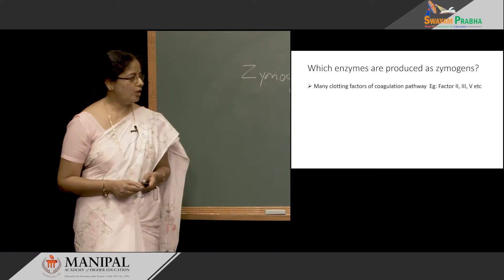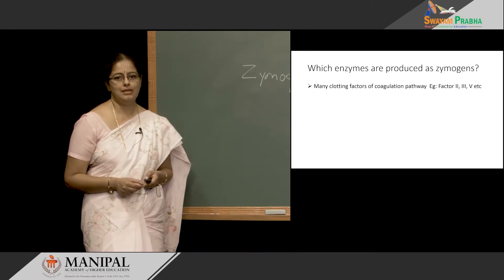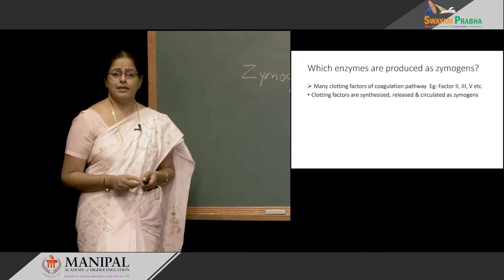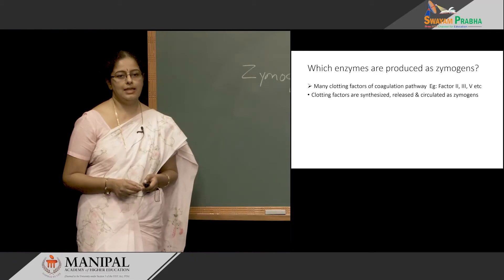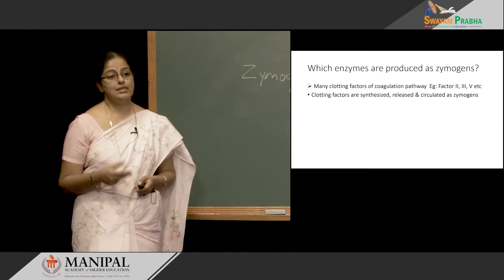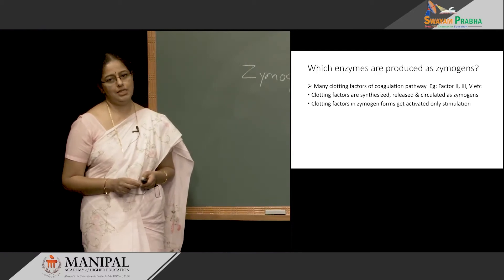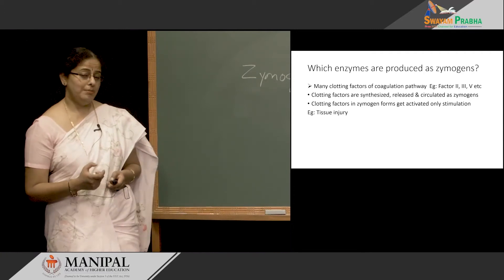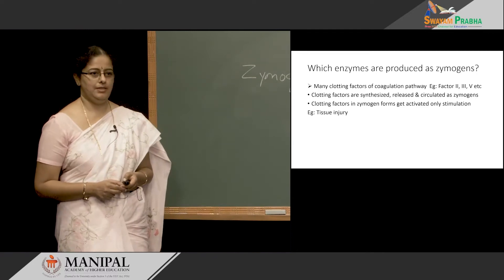We also have several clotting factors of the coagulation pathway which are produced in zymogen forms — for example, factor 2, factor 3, factor 5, and so on. These clotting factors are synthesized at different sites and released into the blood. They circulate in the blood as Zymogens and get activated only when there is stimulation, for example, if there is tissue injury and we want the blood to clot to prevent blood loss.